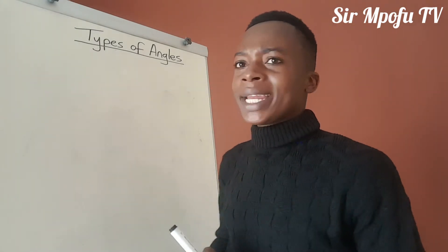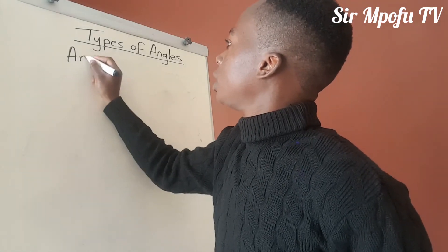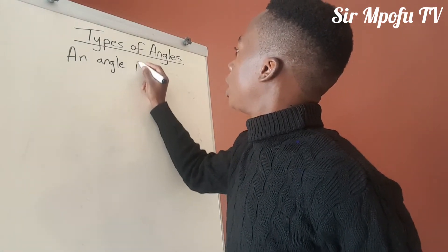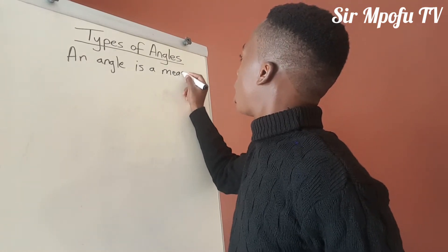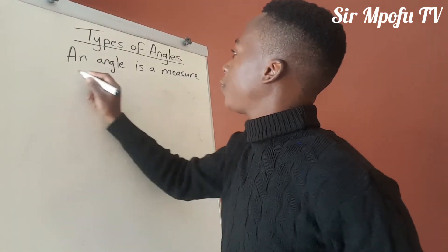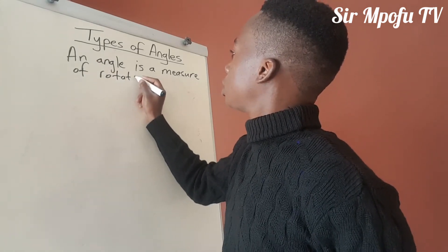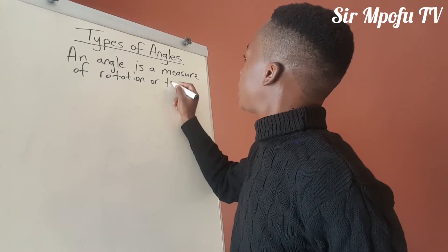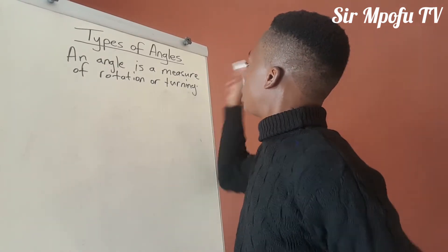The first thing I want you to know and understand is what an angle is. An angle is a measure of rotation or turning. That is what you call an angle.